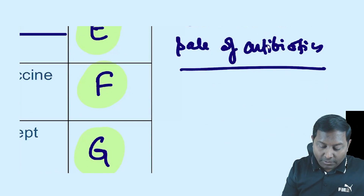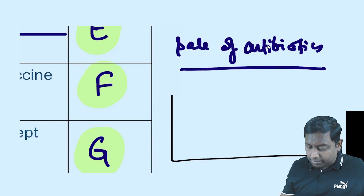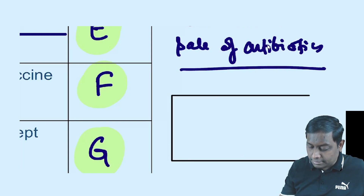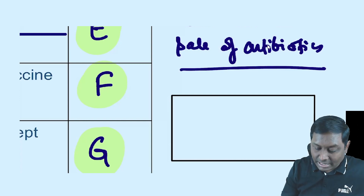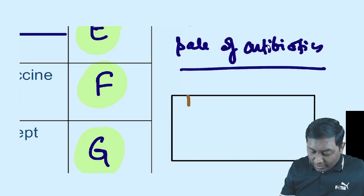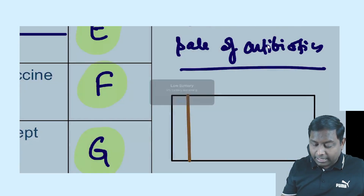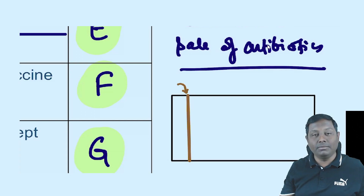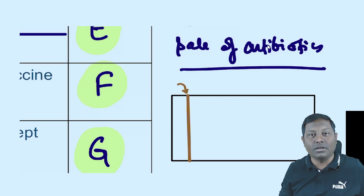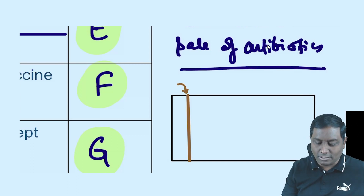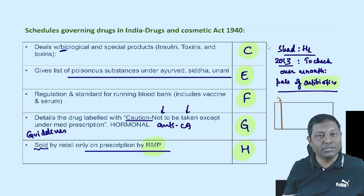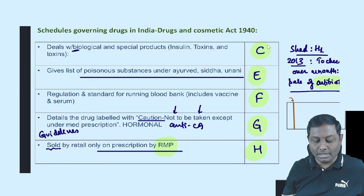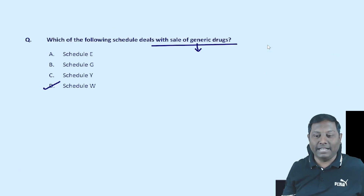Don't forget Schedule H1, which came into existence in 2013 to check unauthorized sale of antibiotics. On the strip of a Schedule H1 drug, you will find a red line on the left-hand side. Whenever you see a red line on the left side of the drug strip, it is under Schedule H1. Schedule H1 mainly covers anti-epileptic, anti-hypertensive, anti-diabetic, and antibiotic drugs — 'H1' first stands for antibiotic.